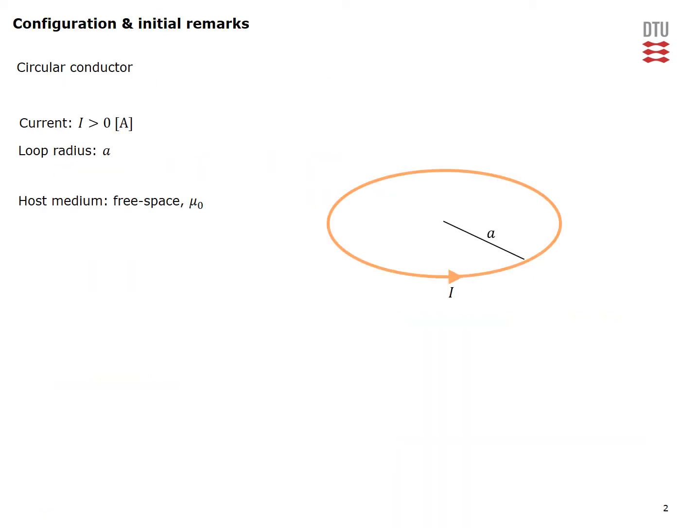This is our circular conductor loop. It carries a current I which is positive and flows in the direction indicated. It has a radius equal to a and it's located in free space with permability mu0.